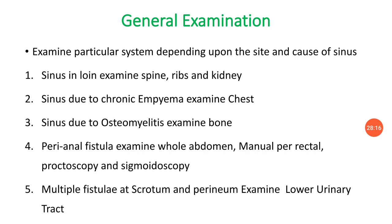General examination: examine the particular system depending on the site and cause of sinus. For a sinus in the loin, examine the ribs, spine, and kidneys. For sinus due to chronic empyema, examine the chest thoroughly. In osteomyelitic sinus, examine the bone. In perianal fistula, examine the whole abdomen, perform manual per-rectal examination, and proctoscopy and sigmoidoscopy should be done. If multiple fistulas at the scrotum and perineum, examine the lower urinary tract.